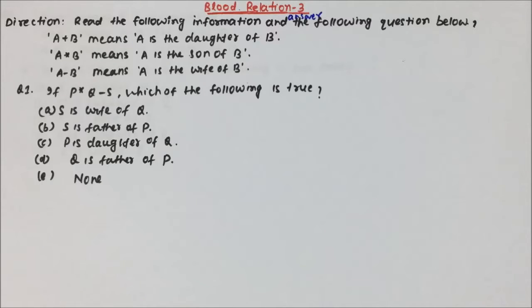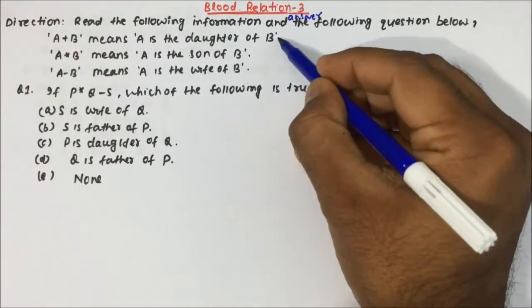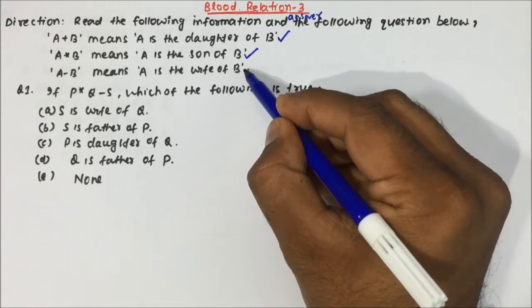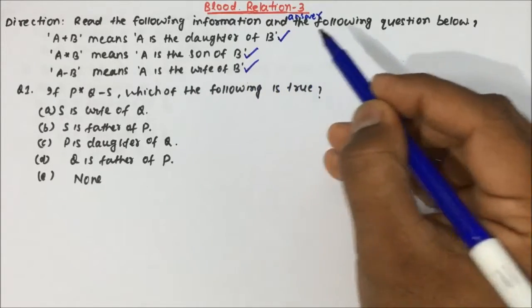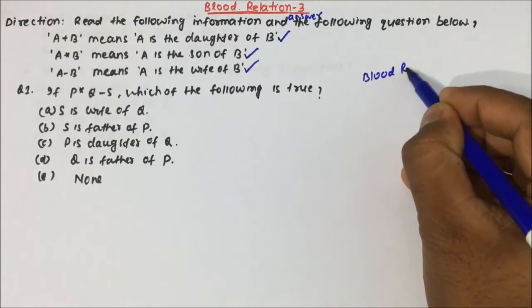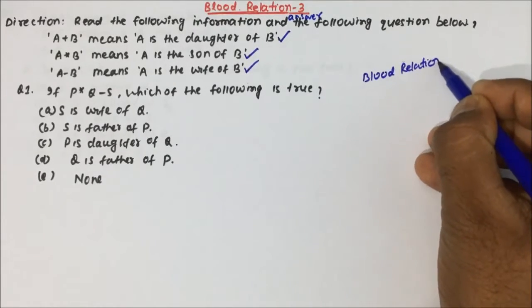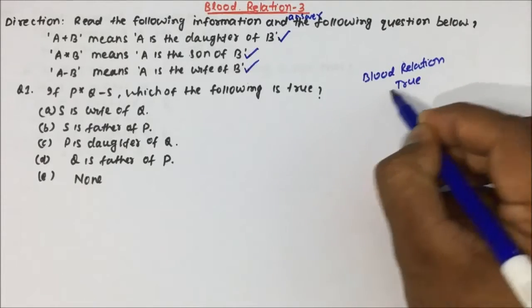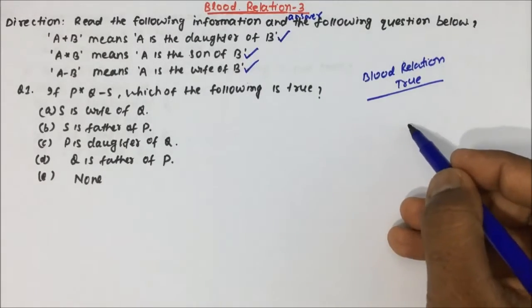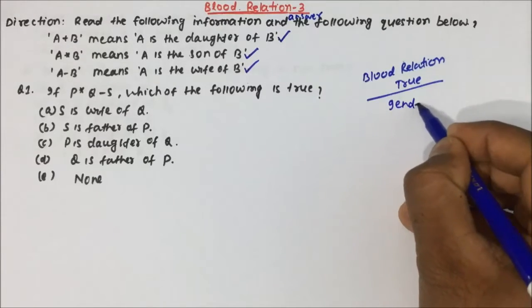So let's read the question, understand, and then try to solve. Direction: read the following information carefully and answer the following questions below. This kind of question we solve using a Blood Relation tree. In the Blood Relation tree, we only have to take care of the gender and the relation.